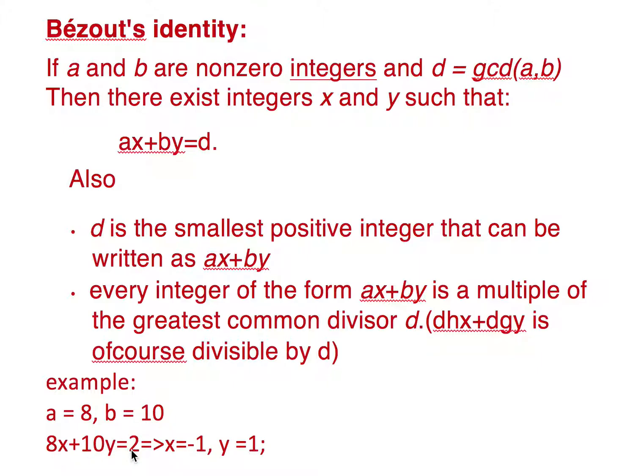If we write 8x plus 10y equals 2, this is the pair which satisfies the equation: x equals minus 1 and y equals 1.